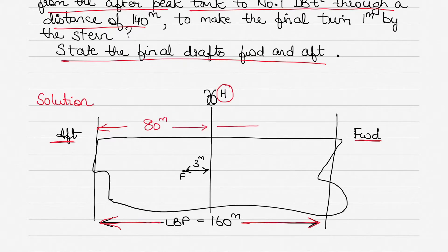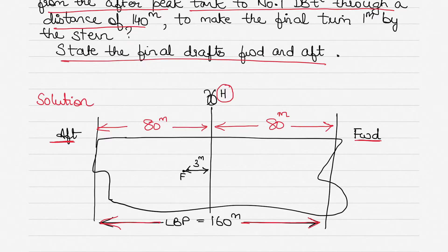Similarly, from midships to the forward perpendicular, the distance is 83 meters — half of the length between perpendiculars. The center of rotation, denoted by F, is 3 meters aft of midships. HF was 3 meters aft, as given in the question. I've drawn everything given in the question onto the diagram.